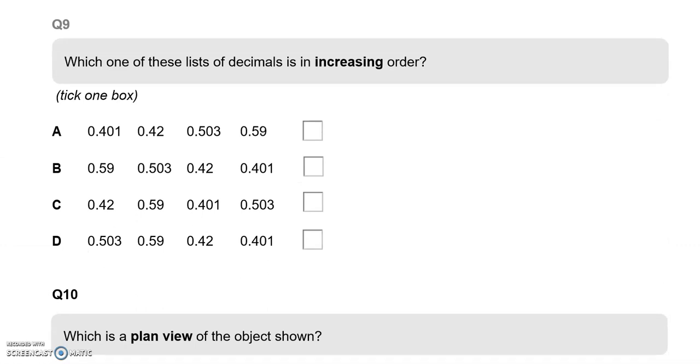Which one of these lists of decimals is in increasing order, going up? We're starting with the smallest and going to the highest. Looking at the first row, we've got 0.401, 0.42, 0.503, 0.59. The first digit for all of them is 0, so we can't place them in order based on that. Looking at the second digit after the decimal point, we've got 4, 4, 5, and 5. So the ones with the 4s are smaller.